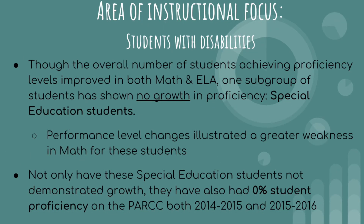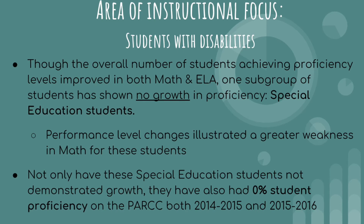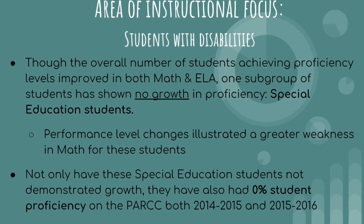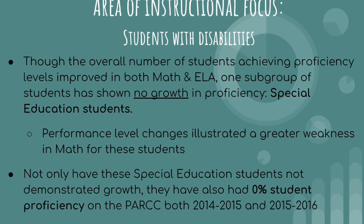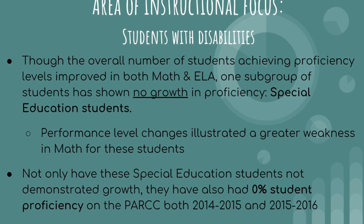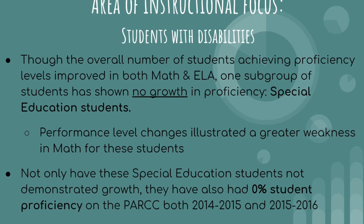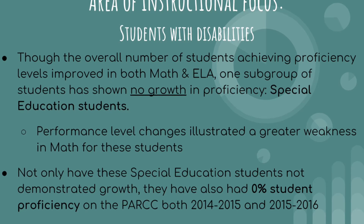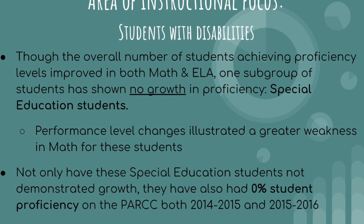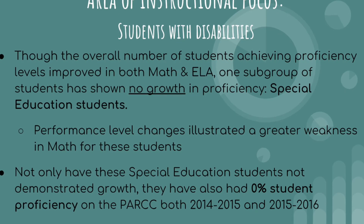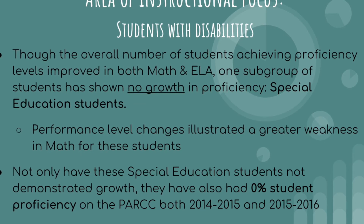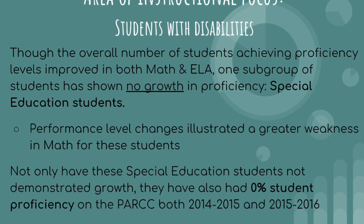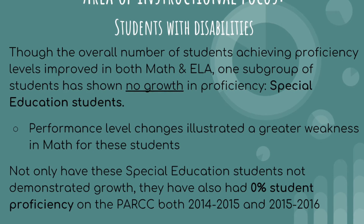The second area of instructional focus is ELL students. Despite an overall improvement in ELA proficiency, their growth is lower than other subgroups. In ELA, ELL proficiency levels are 13% lower than Hispanic students and 17% lower than Black students. In math, ELL levels are 7% lower than Hispanic and 16% lower than Black students. ELL students make up nearly a third of the entire student body, so language instruction is an area of focus for the entire school.